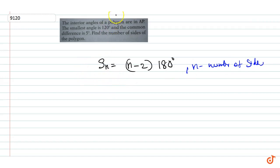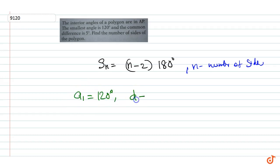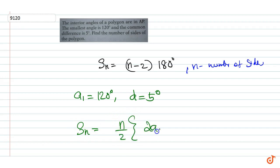It is given that the interior angles are in AP. Therefore, the first term a1 is equal to 120 degrees and common difference d is equal to 5 degrees. So we have Sn equal to n/2 into (2·a1 + (n-1)·d).